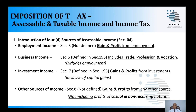Employment income is covered under Section 5 of the Inland Revenue Act, which covers gains and profits from employment. Business income comes under Section 6 of the Inland Revenue Act and is defined in Section 195 to include trade, profession, and vocation. In business income, employment income is to be excluded.